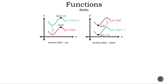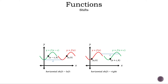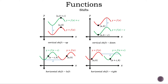With vertical shift, we have a constant which affects the output, so the y value either goes up or down depending if the constant is being added or subtracted. That leaves us with horizontal shift. With horizontal shift, we have a constant which affects the input, so the x value either goes to the left or to the right depending if the constant is being added or subtracted. And those are the four shifts we could have.